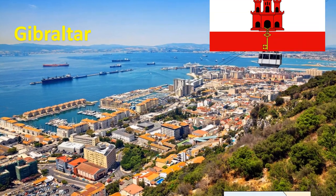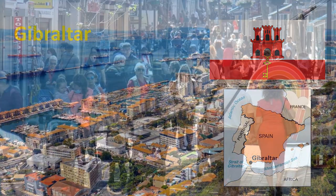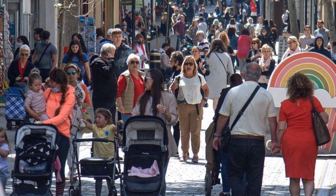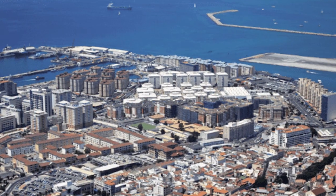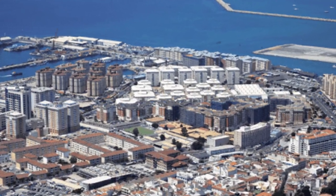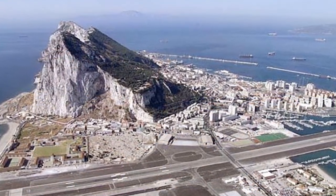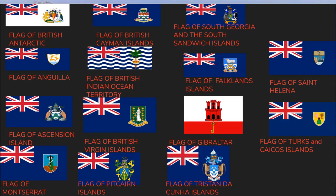Gibraltar is located at the southern tip of the Iberian Peninsula. Population is about 34,000. The capital is Gibraltar City. It is the only UK overseas territory that does not have the Union flag as part of its flag.